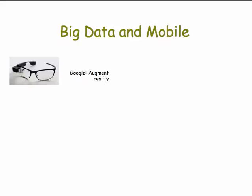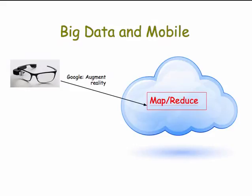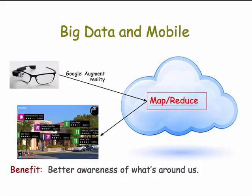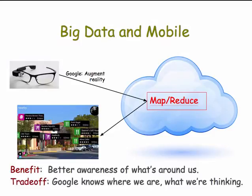Another example is augmented reality, an increasingly growing trend. Imagine you have Google Glass: as you walk around, your location is being sent to Google, which quickly looks up restaurants and other things in your vicinity and displays them on your Google Glass. This is a tremendous benefit — you're more aware of what's around you, including possible dangers, which could make us safer. But the big trade-off is Google knows where we are and what we're thinking while we're wearing those glasses.